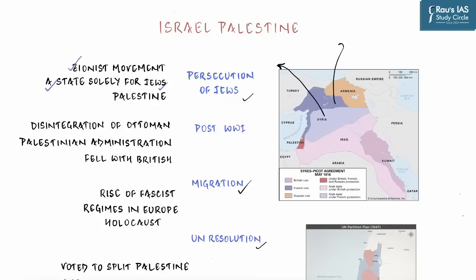Jews who were persecuted in European countries decided to unite and move to a location on earth where they would establish their own state, just for themselves. The place identified was Palestine. Once it was decided that Palestine would be the site of their own country, they started to migrate.